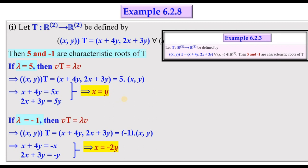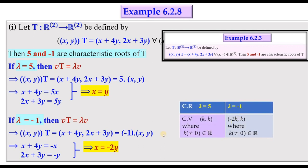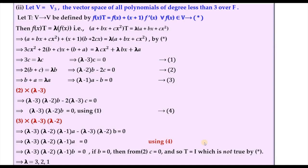k can take any nonzero value from the field of real numbers. For λ = -1, using the same definition and equating components, solving gives x = -2y. When y takes the value k, x takes the value -2k, with k ≠ 0. So corresponding to λ = 5 we have characteristic vectors (k, k), and when λ = -1 we have ordered pair (-2k, k), k any nonzero scalar.